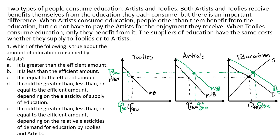The question asks what is true about the amount of education consumed by artists. Artists are underestimating the value of their education — they see a lower benefit than society does. Because of that, they won't get as much education as the efficient amount. So the amount of education artists consume is less than the efficient amount.